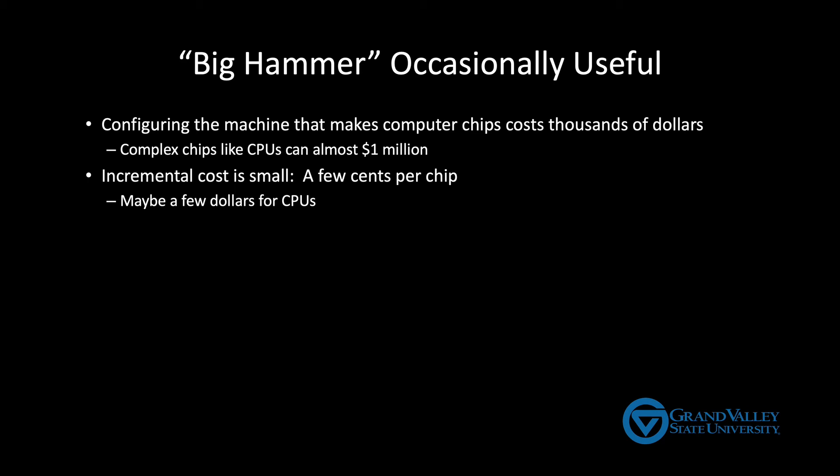It only costs a few cents for each chip you produce at that point, and it might cost a few dollars for each CPU you produce at that point. So for as big as that setup cost is, it becomes minor when you can amortize that cost or spread that cost out over millions of chips. But the downside is that this isn't effective when you only need a few chips, right?